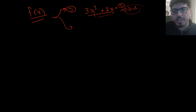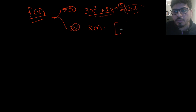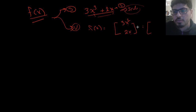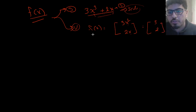Also, f of x could be a vector-valued function. A vector-valued function is a function that returns a vector. For example, f of x could be [3x squared, 2x]. Substituting x = 1, we end up with [3, 2]. So the function f of x is a function that returns a vector for each value of x.